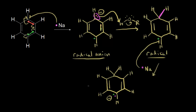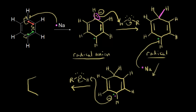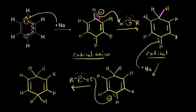Now that we have a new anion, the last step is another acid-base reaction. Our alcohol comes along again, and the carbanion picks up a proton. We draw our final product with the two pi electrons retained, two hydrogens on the top carbon, hydrogens around the ring, and a proton added to the bottom carbon. This gives us our 1,4-cyclohexadiene product.